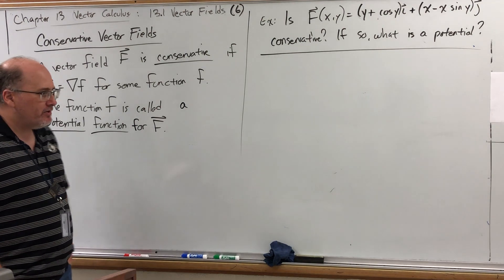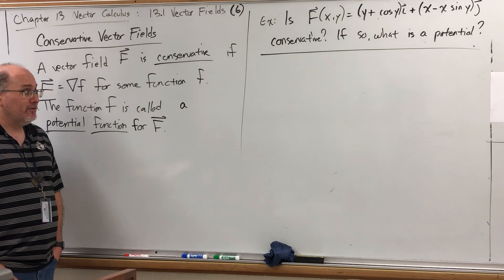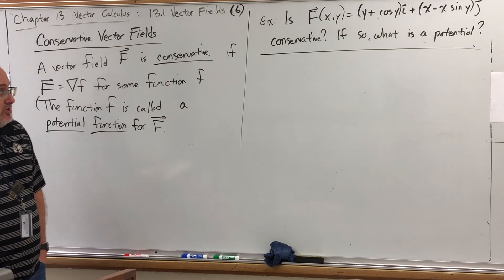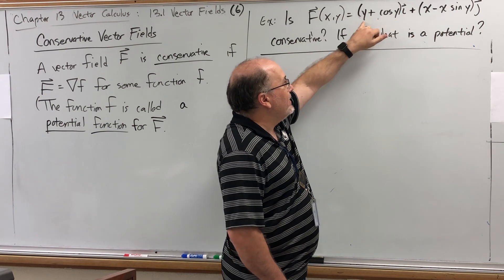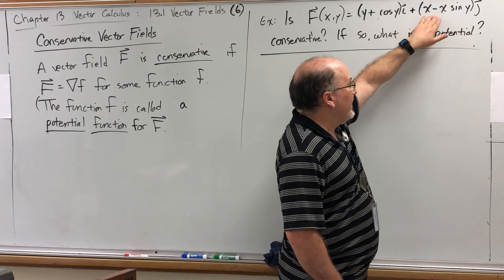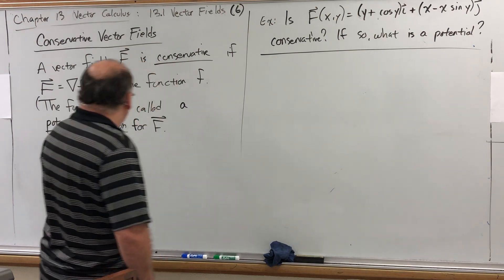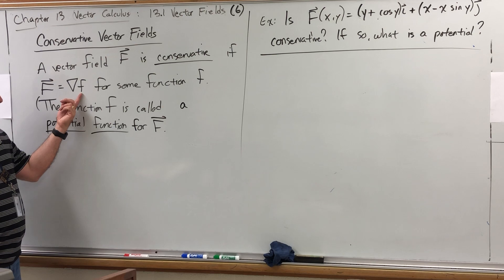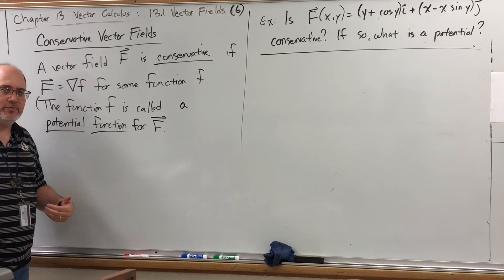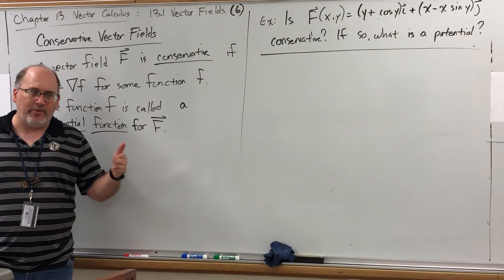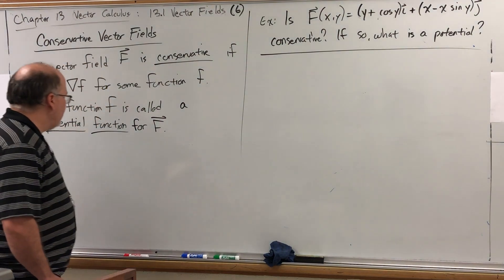In section 13.3 there are going to be some really important things that you can do on a conservative vector field. So it's a natural question to ask: if I give you a vector field, how can you tell if it's conservative? If so, what is a potential? I say one of its potentials because if you go back to the definition, your potential gets the gradient calculated, which is just a sequence of partial derivatives. If your original function had a constant, it would disappear on each of those partial derivatives. So if you have a potential function, you can always generate another one by slapping on some constant at the end, as if you were integrating.